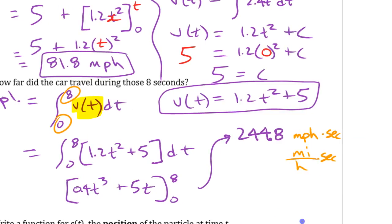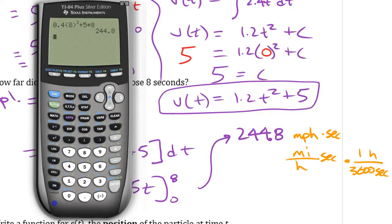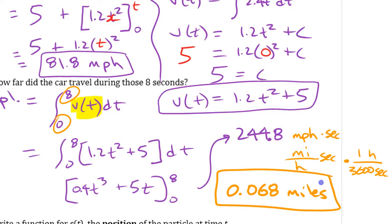To fix the units, we multiply by the conversion factor: one hour equals 3600 seconds, so we divide 244.8 by 3600. That gives approximately 0.068 miles — less than one mile, which makes much more sense than 244 miles in eight seconds. That's an example of using two different methods starting from acceleration and working back through velocity to find displacement.